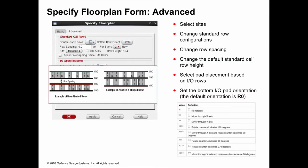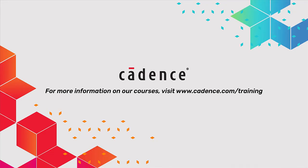You can specify the kind of rows that you want to see by specifying double back rows, which means that they are flipped and abutted. You can specify spacing between the rows, and the site definition that you see here is populated from the LEF file.